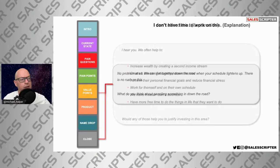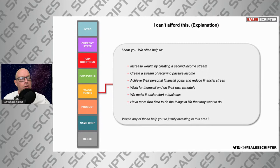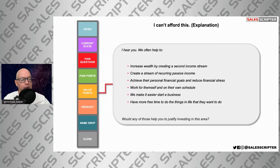Another objection is 'I can't afford this,' referring to sign-up fees or the cost to join. Respond by going back to your value points: 'We often help people increase their wealth by creating a second income stream and a recurring passive income stream. If you could see these improvements, would that help you justify finding the money to invest in this?'